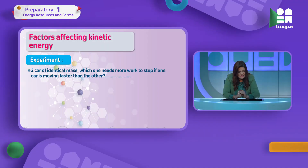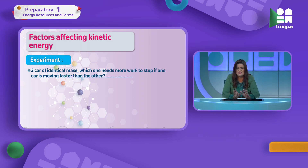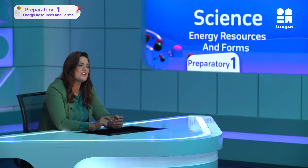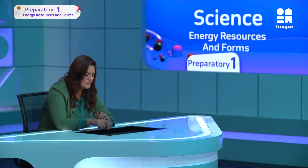Kinetic energy means movement — and movement can have speed. Any moving object has speed. Consider two cars identical in mass: which one needs more work to stop if one is moving faster than the other? The faster one is harder to stop. The slower one is easier to stop. So velocity and speed play a very important role in affecting kinetic energy.